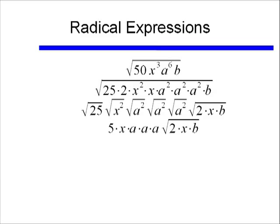And now I'll go ahead and find these square roots. Square root of 25 is 5, square root of x squared is x, square root of a squared is a, and again I have that three times, and then I have my left over square root of 2xb. And I write that finally as 5x a cubed times square root of 2xb.